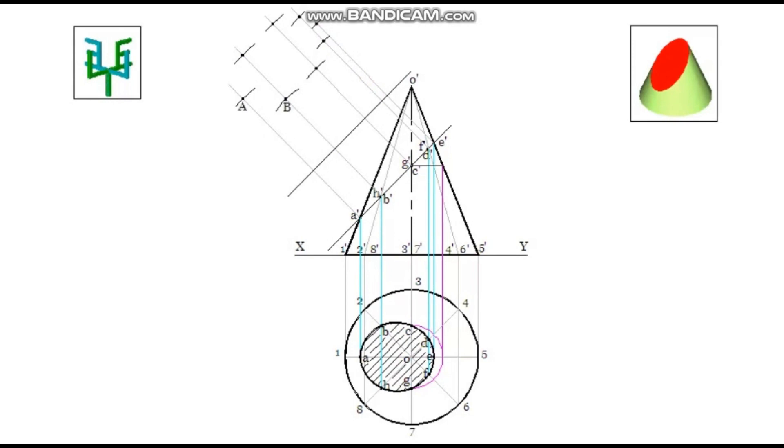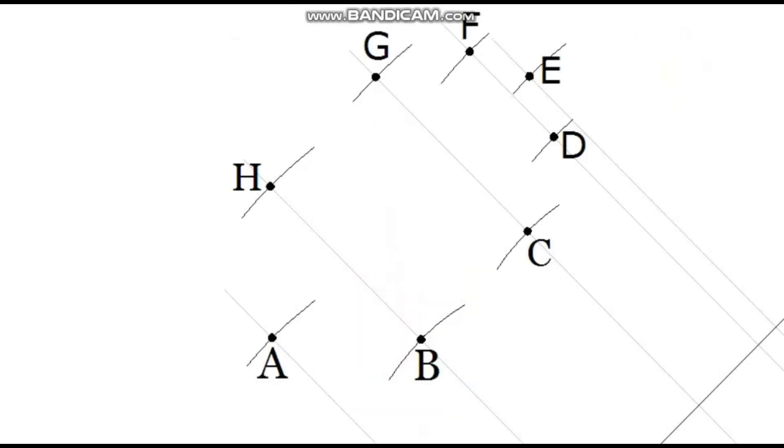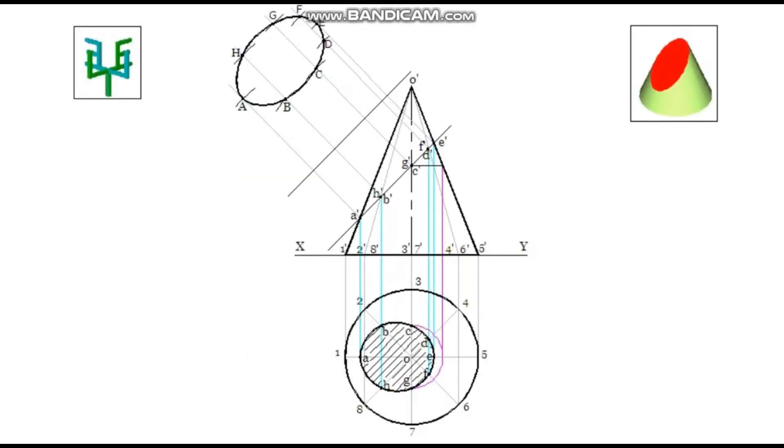Name these points. Join these points with a smooth curve. Draw sectional lines, mark the dimensions and name the views.